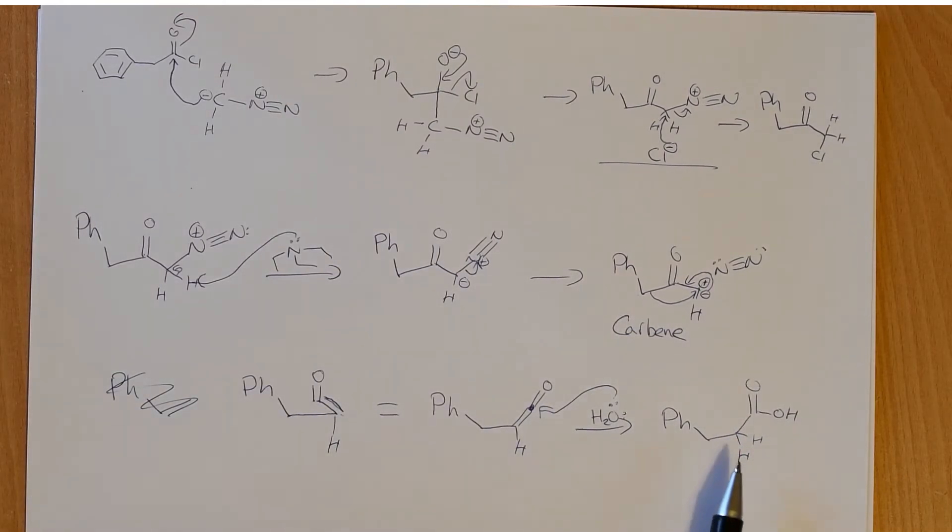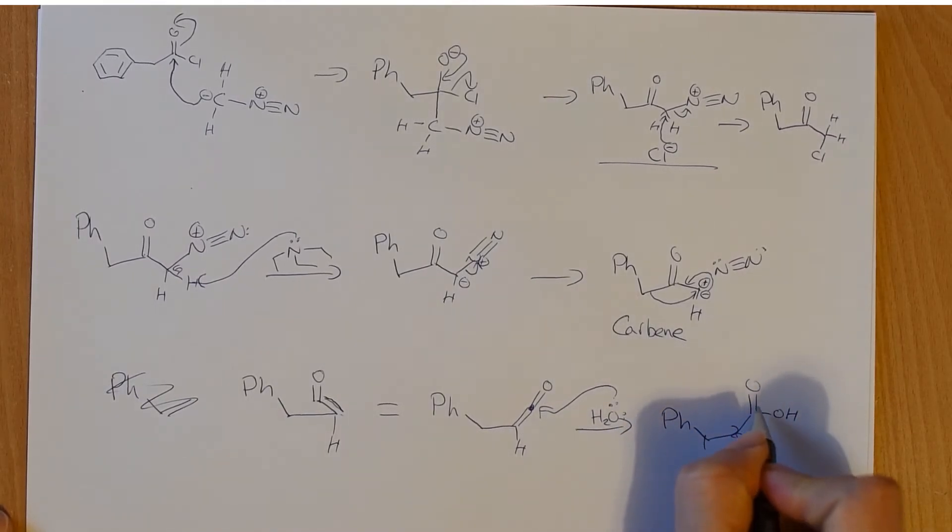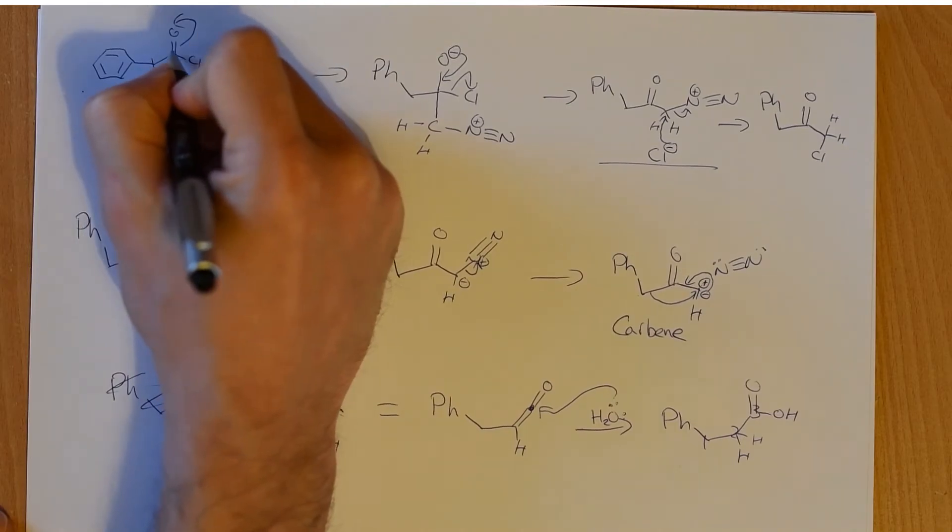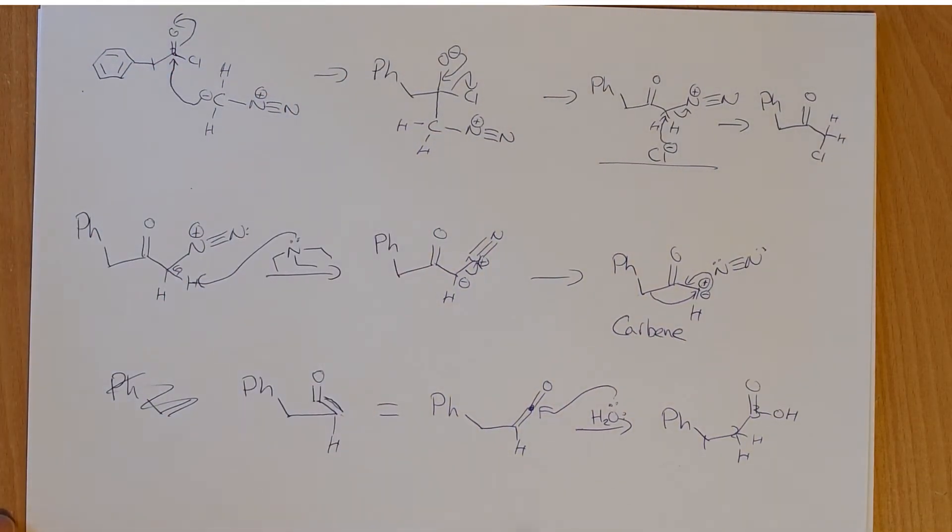So we make our carboxylic acid, except now, if we look at the molecule we finish up with, this molecule here, there are one, two, three carbons, and here there are only one, two carbons. So we've made a homologue, we've made it one carbon longer.